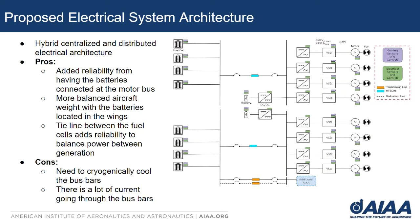Here we have the proposed electrical system architecture. It's a hybrid centralized and distributed electrical architecture. It consists of eight fuel cells split into two generation buses. These generation buses and fuel cells will be put in the body of the aircraft and will be connected via a tie line to provide added reliability and balance power between the two. Power will then be sent to each of the wings via a high-temperature superconducting cable. On each of the wings, we'll have four motors, variable speed drives and inverters, as well as a battery connected directly to that distribution bus.